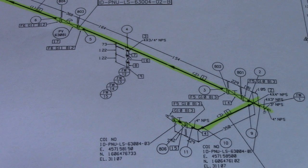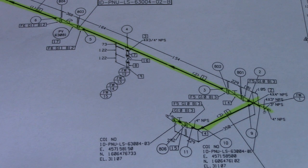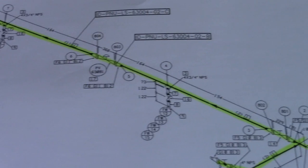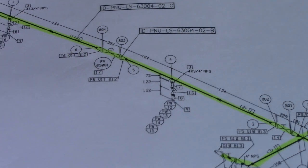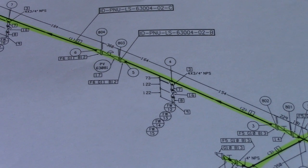Number five is BOM. BOM stands for Bill of Materials, which includes the size of the materials, material specification, material code, and quantity. That is the Bill of Materials — number five.